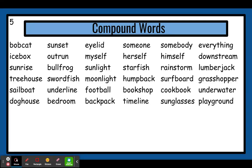We have sun as the first part, and rise as the second part. Sun. Rise. If you know what the word sun means — I think everybody does — and if you know what the word rise means, when something comes up, if you put them together, then you will know what a sunrise is. It's when the sun comes up in the sky. Sunrise.